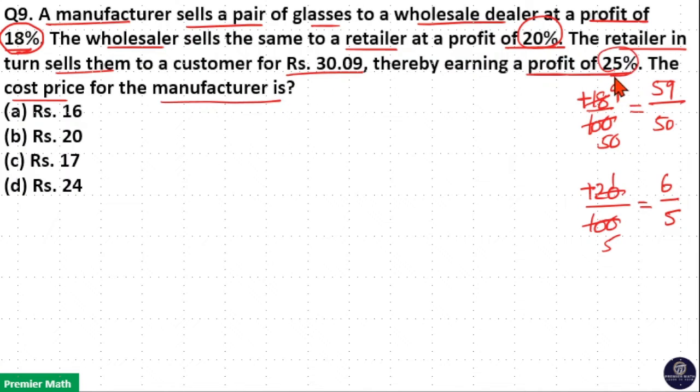Again next profit is 25%. So plus 25 by 100 means 25 goes 4 times in 100. So plus 1 by 4 means if 4 part is the cost price then 4 plus 1, 5 part is the sell price. Now take the ratio of sell price.